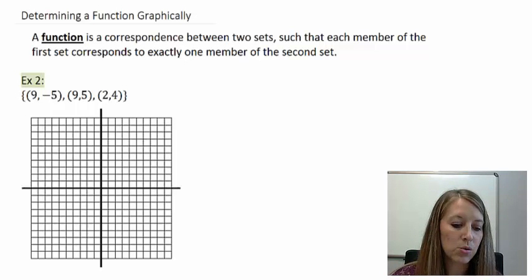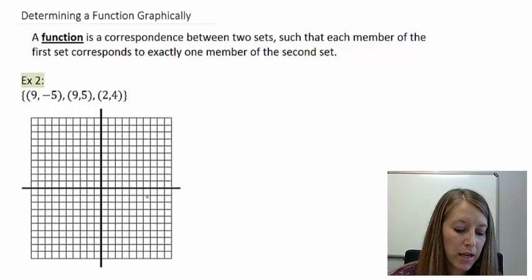So let me plot these three points. The first one is (9, -5). My second point was (9, 5). And my third point was (2, 4).